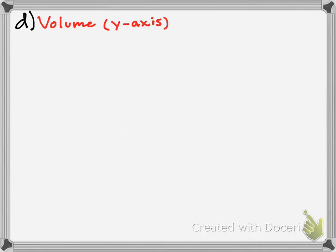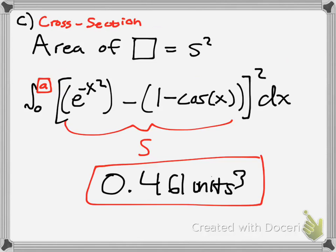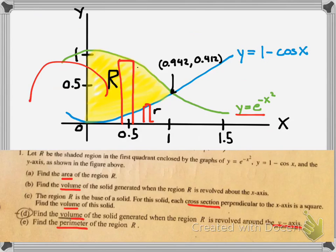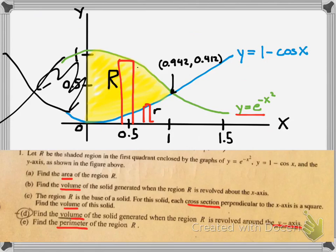Now we find the volume when the graph is rotated about the y-axis. Instead of rotating horizontally like last time, the graph rotates vertically. Since we're rotating about the y-axis, we need to integrate with respect to y. That means instead of y = f(x), we want x = f(y) — we need to solve each equation for x.